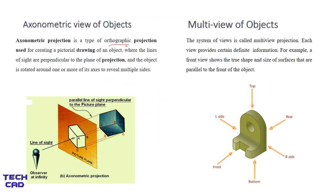Axonometric is a type of orthographic projection for creating a pictorial view of the object, where the lines of sight are perpendicular to the plane of projection and the object is rotated around one or more of its axes to reveal multiple sides. You can see that this is a cube, and by rotating the object at a particular view and making a projection on the projection plane, the lines of sight remain parallel. The observer is at infinity, and this is an axonometric view of the object.